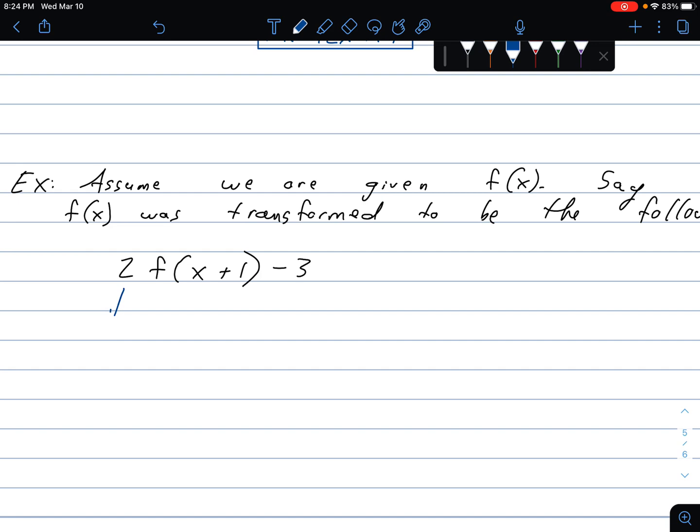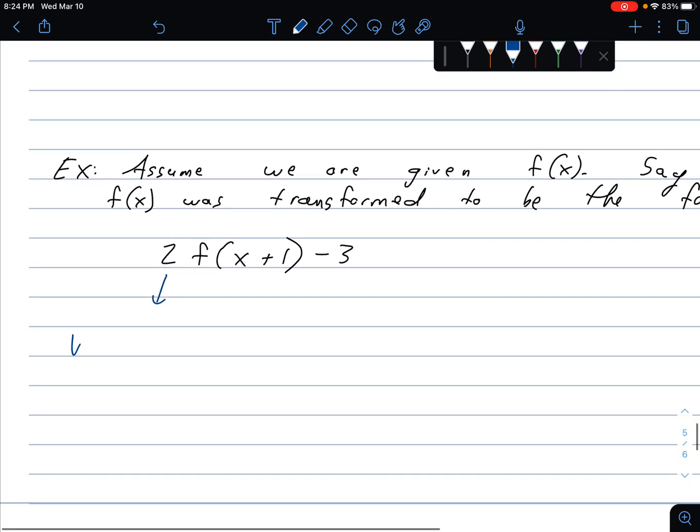So the first thing I notice is this 2 tells me I am, it's external. So it's vertical. Because it's 2 times the f. It's not 2x. It's 2 times the whole thing. So this is a vertical stretch. And vertical is always how we expect it. So by 2. By a factor of 2.